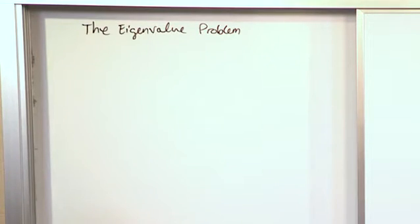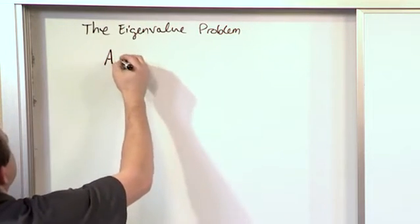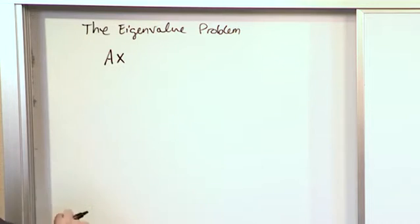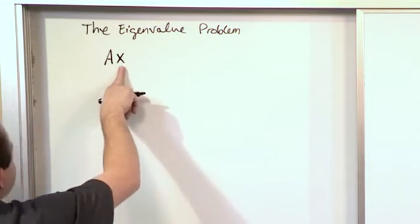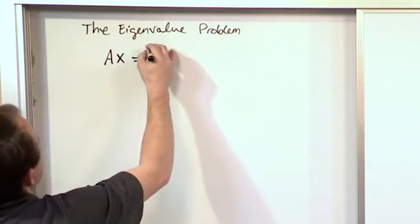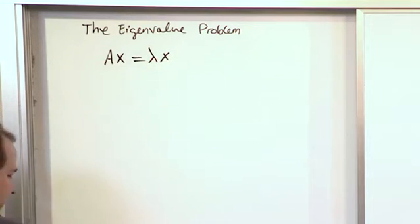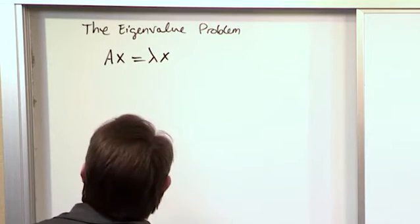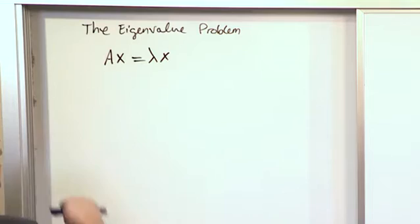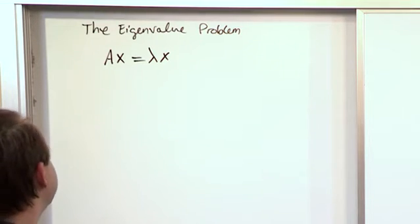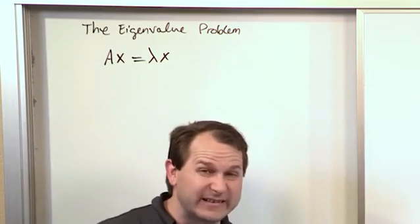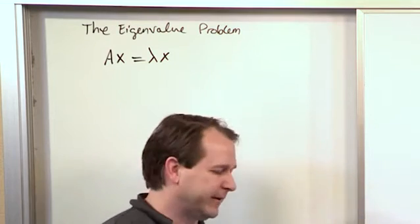All right, basically, if you have a matrix A times some column vector x, which has lots of unknowns—don't forget this is a matrix equation—and it's equal to what we call lambda x. That's it, ladies and gentlemen. That is the eigenvector problem. If you understand everything there is to know about this equation, then you understand eigenvectors and eigenvalues. So it looks deceptively simple. Let's jump into a little bit of the details.